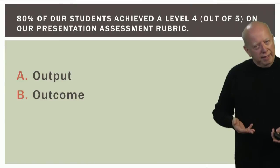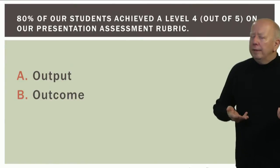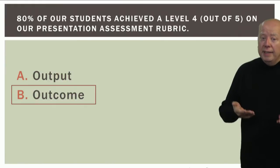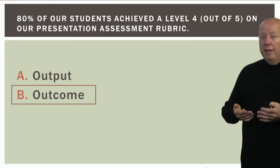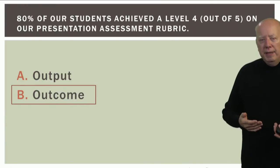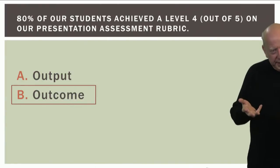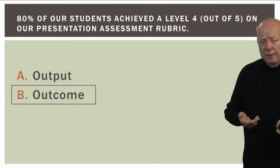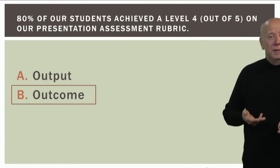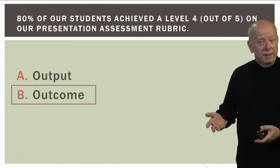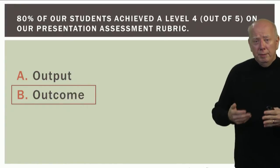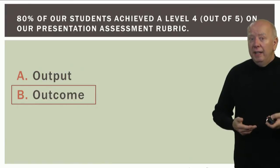Now: 'Eighty percent of our students achieved a level four out of five on our presentation assessment rubric.' This is indeed an outcome because you're measuring the quality of the output — the student. You're measuring the quality of their work, and this becomes an outcome when stated as a percentage. Note that we're missing the number of students that comprise the 80%. When reporting data in Compliance Assist, be sure to include how many students actually make up that 80%.